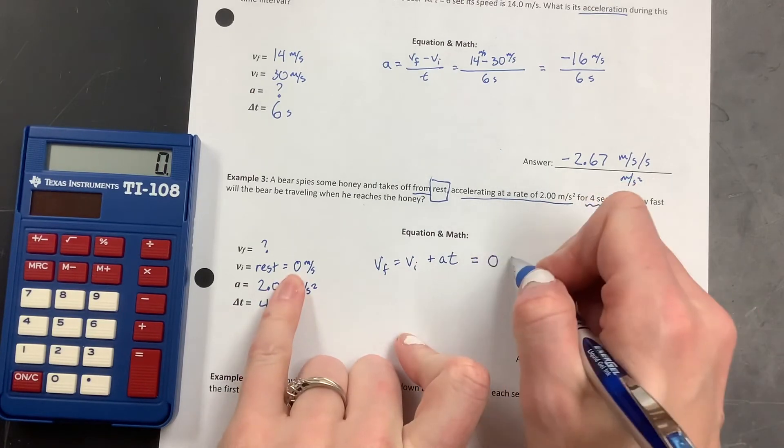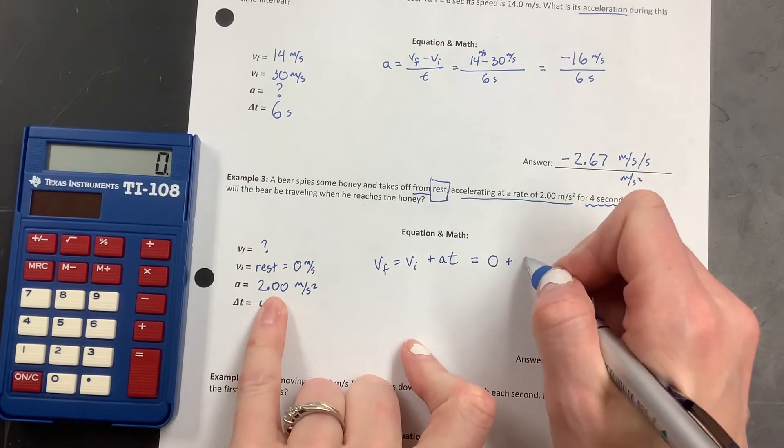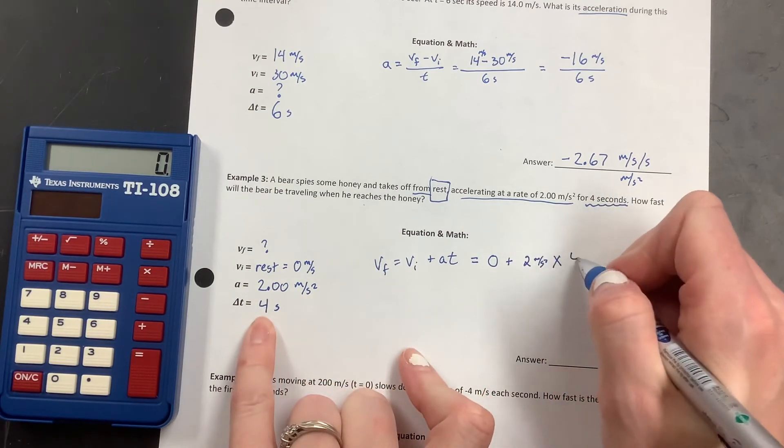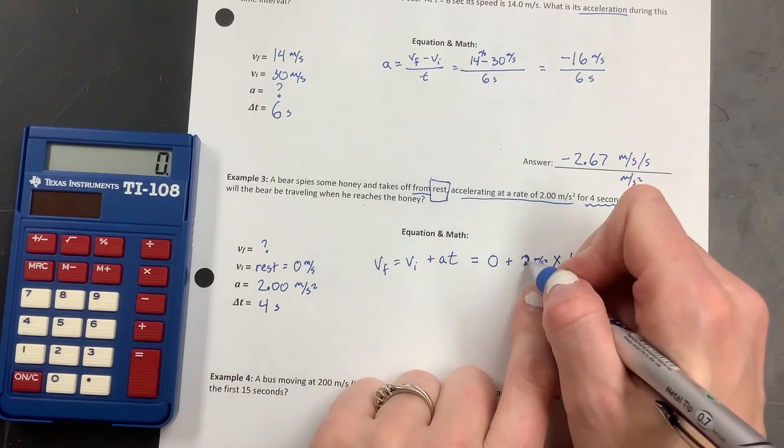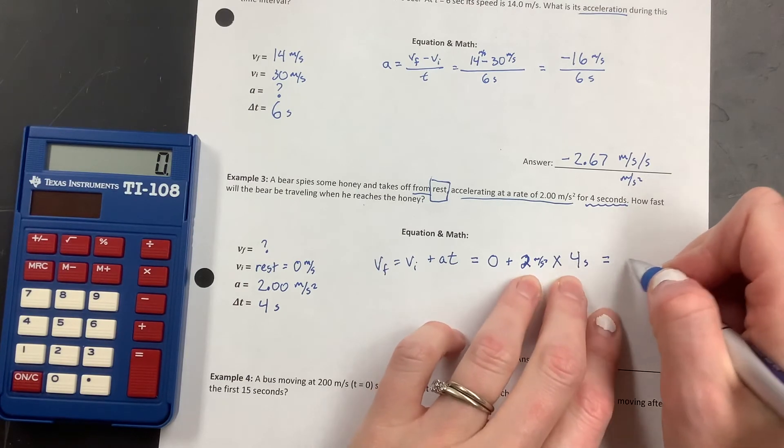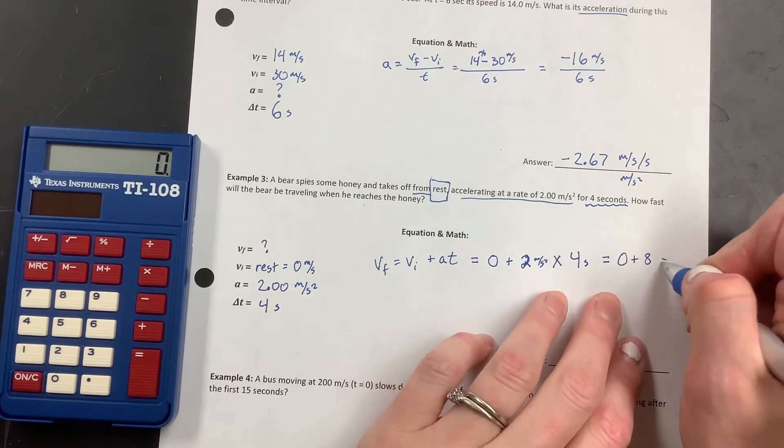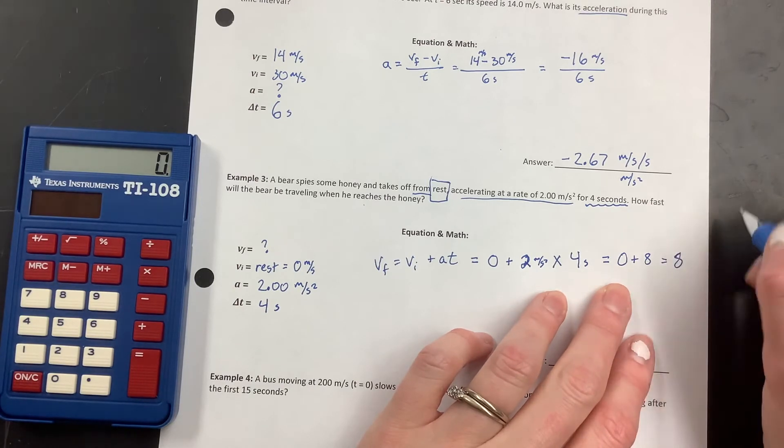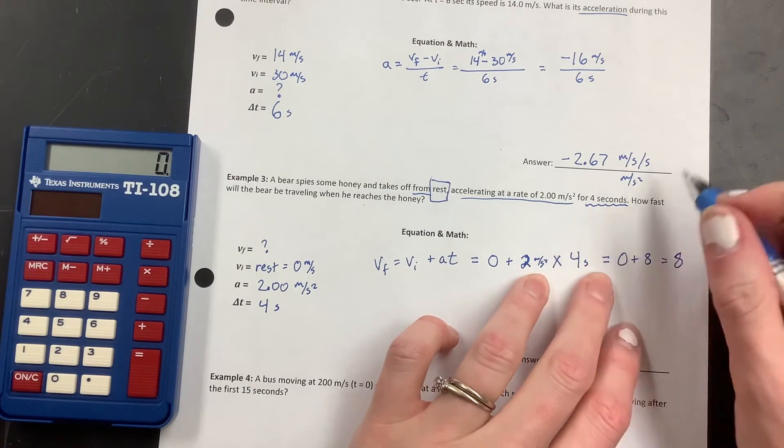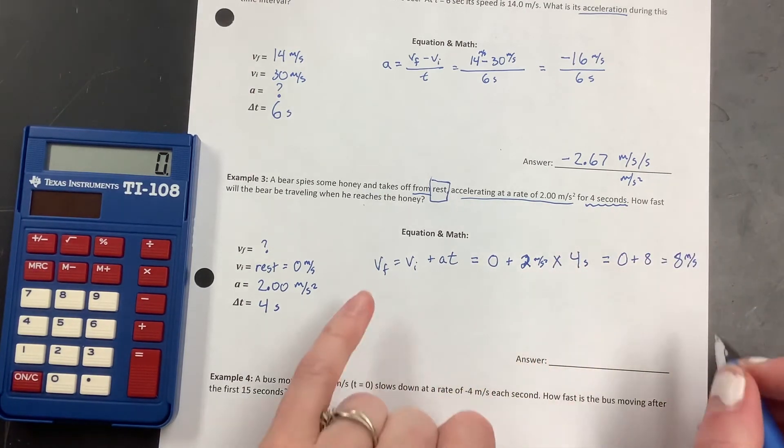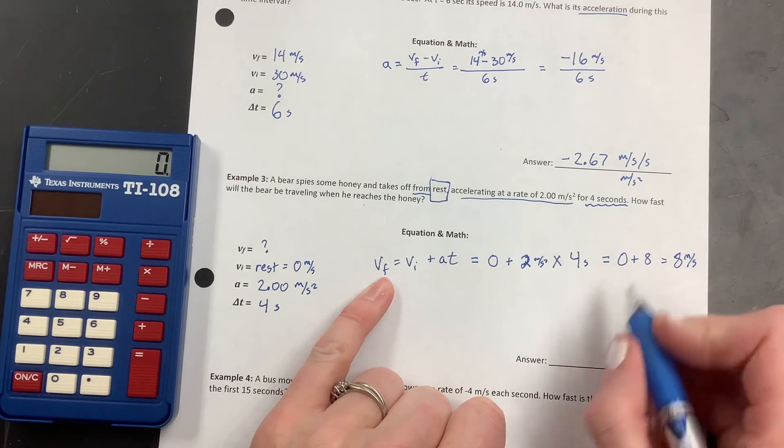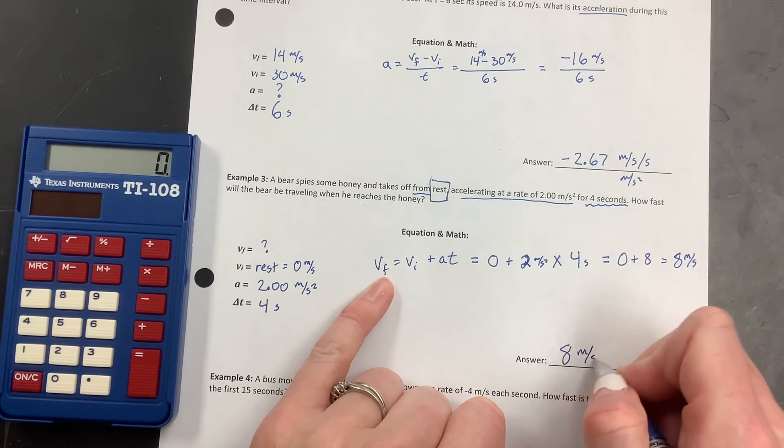All right. VI is 0 plus A, which is 2 meters per second squared, times 4 seconds. So I've got 2 and 4. I can do that math in my head. 2 times 4 is 8. 0 plus 8. 0 plus 8, you should be able to do that in your head too. That's not 0. It's 8. 8 what? This is where it gets tricky. So this second cancels out one of those, which leaves me with meters per second. The other way you can do that is know that velocity is going to be the unit without the squared. That might help. So 8 meters per second is my answer.